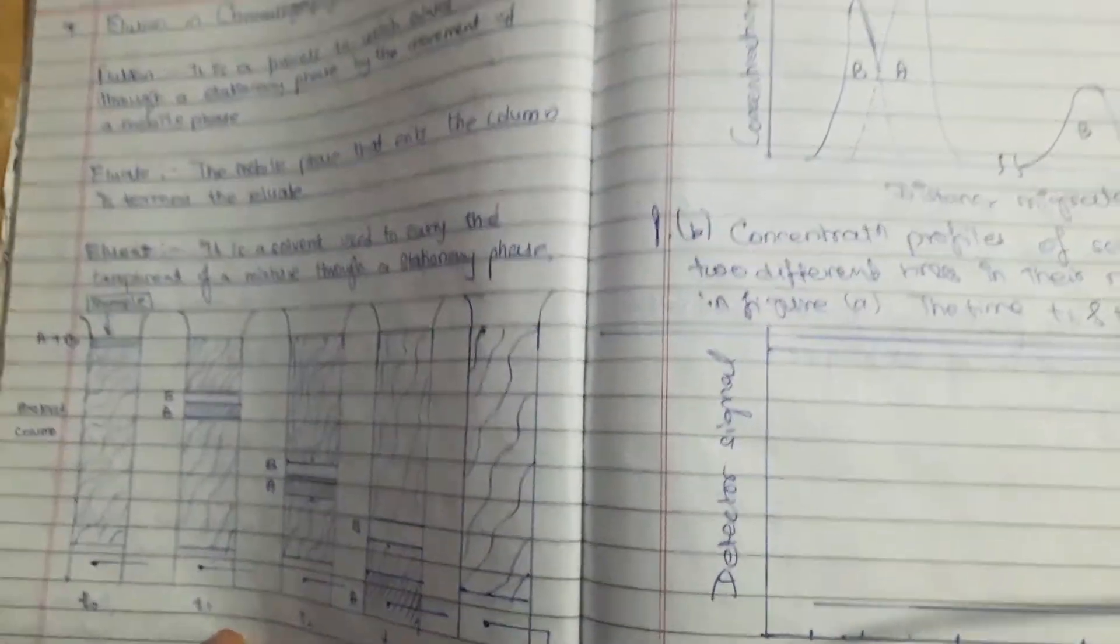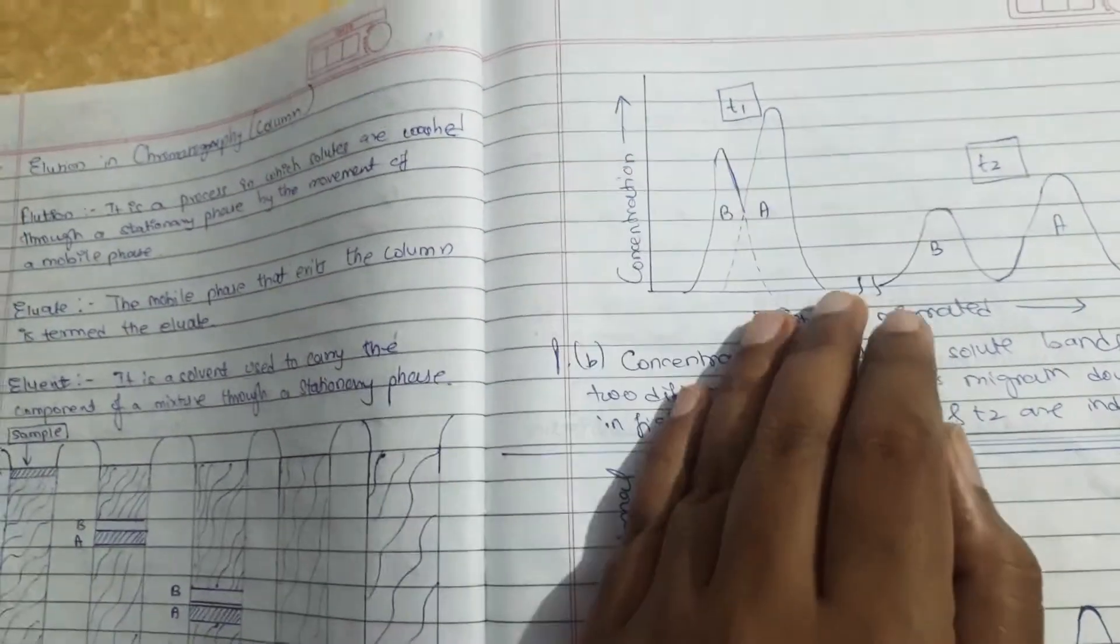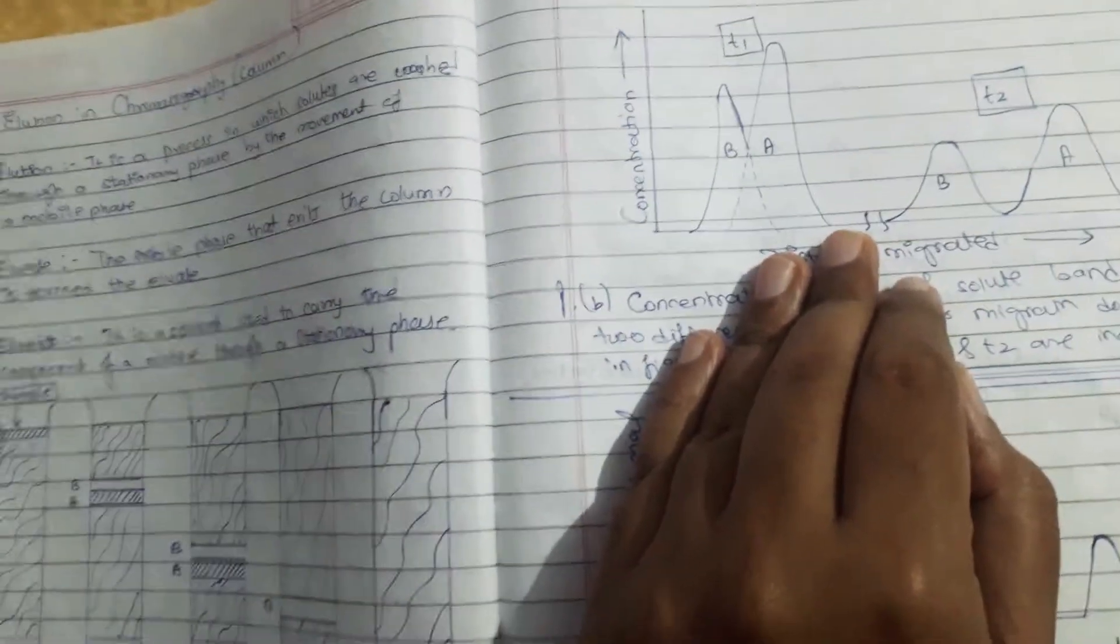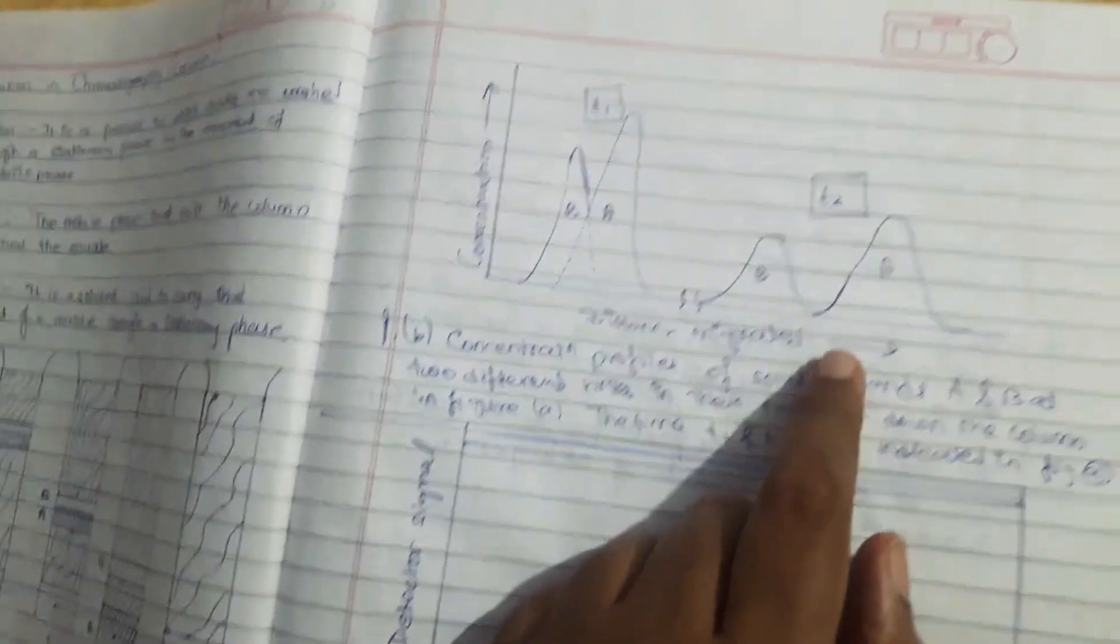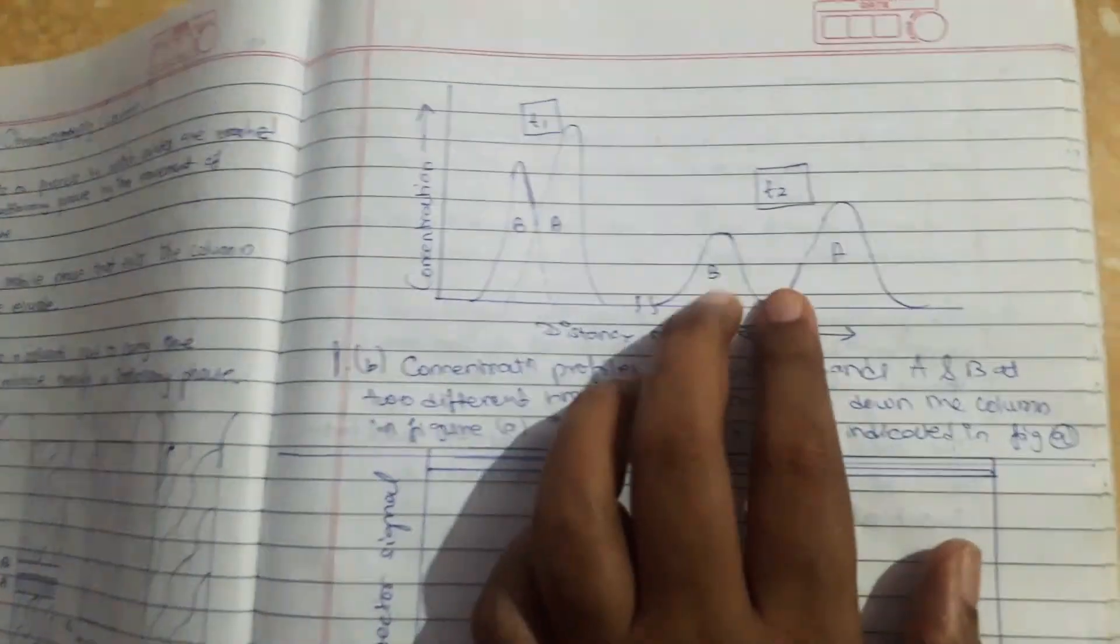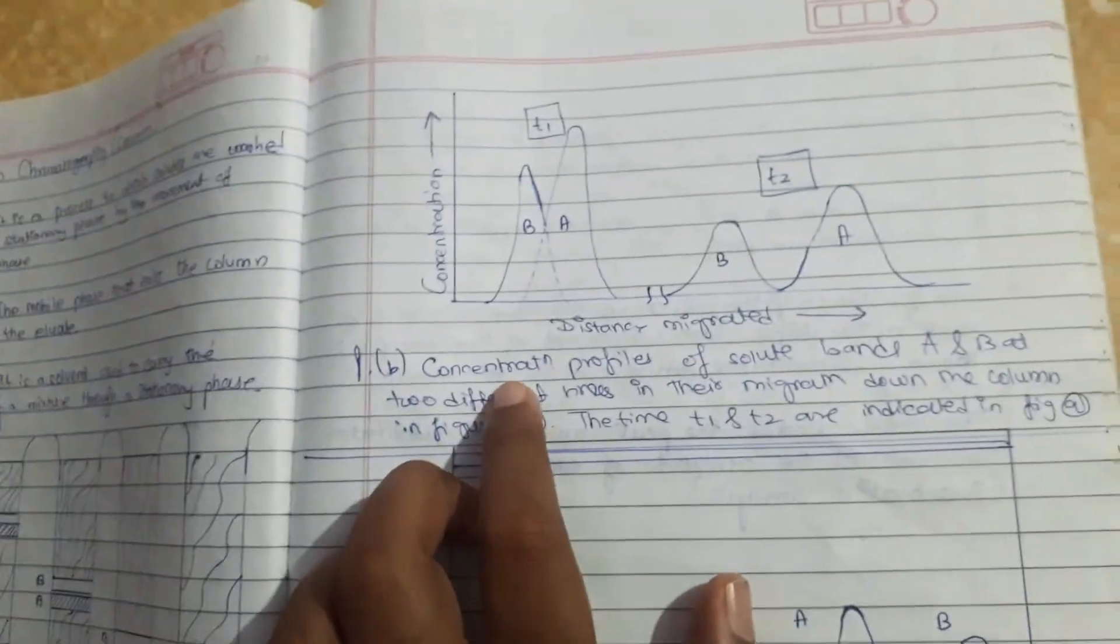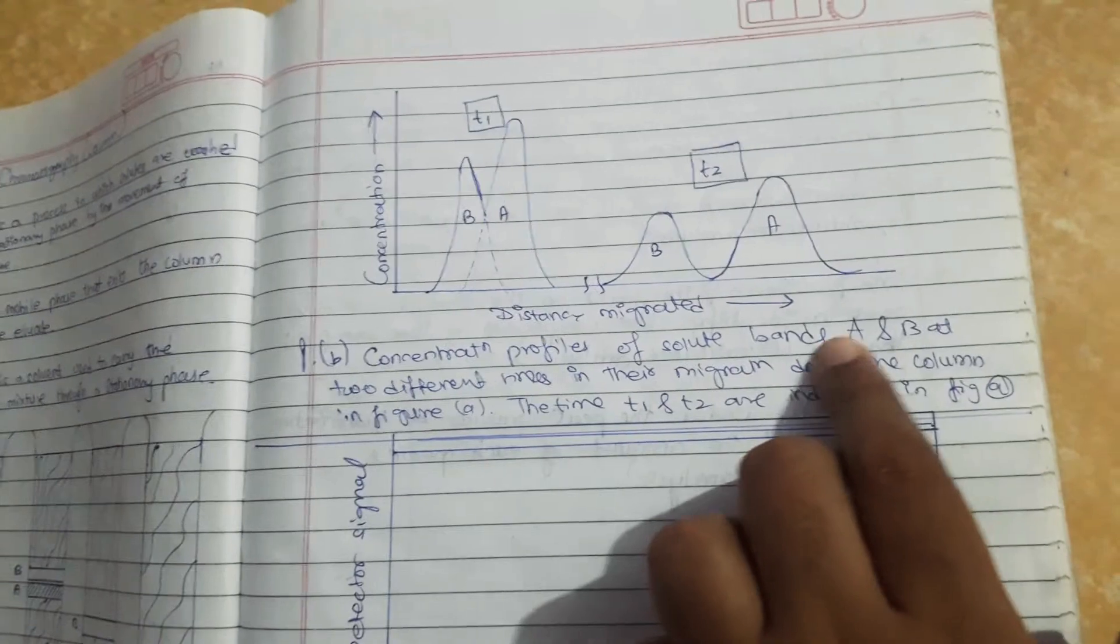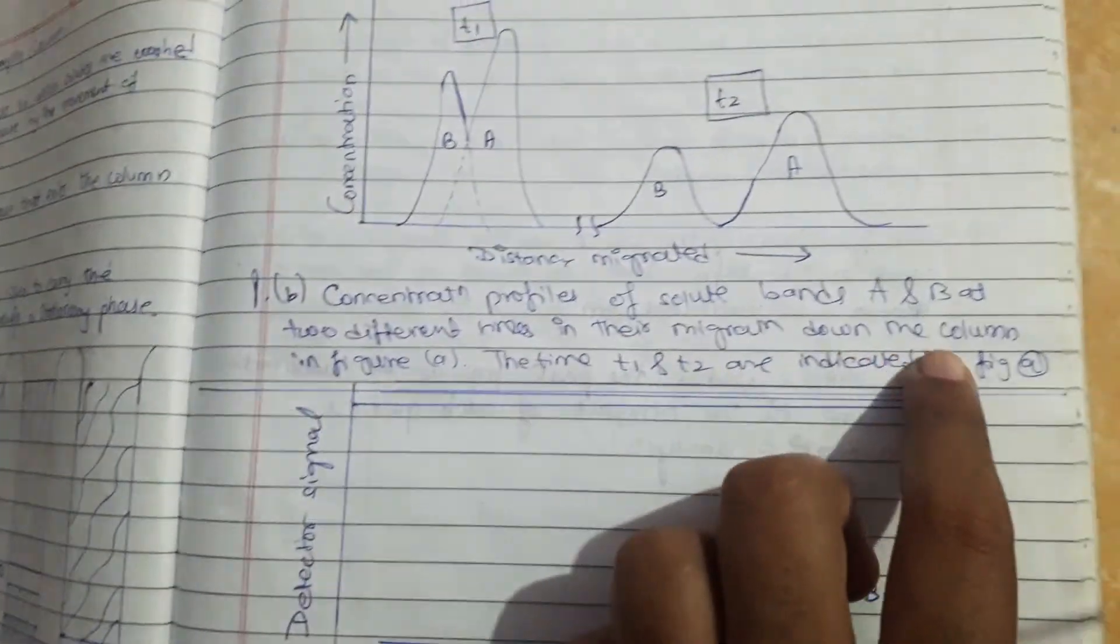Now here is a further graph. As we saw at time t1, components A and B of the mixture are separated but not much. Then at time t2, A and B are separated but the distance between the components is very less.